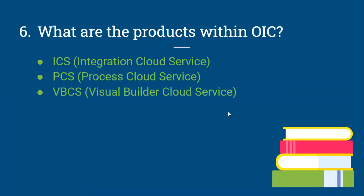What are the products within OIC? Mainly we can say ICS — Integration Cloud Service, PCS — Process Cloud Service, and VBCS — Visual Builder Cloud Service. We can also mention Insights and SFTP, but the three main products within OIC are ICS, PCS, and VBCS.